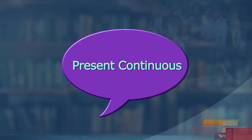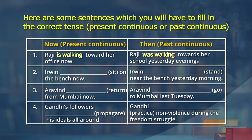Now let us further understand present continuous and past continuous. There is an advantage when you compare and contrast them — it is very interesting. Here are sentences for you: some you will fill with present continuous, some with past continuous. The first one is given as an illustration. Raji is walking towards her office now. In past continuous: Raji was walking towards her office yesterday evening. Now the same way — present continuous, then past continuous: Arvind is sitting on the bench now. Arvind was standing near the bench yesterday morning.